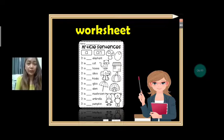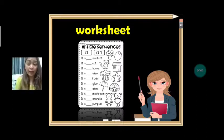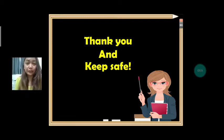I have worksheets for you to answer. Please write the correct answer using A and AN. You use AN if the vocabulary starts with vowel letters — A, E, I, O, U. You use A for consonants. That's all for today. Bye-bye and keep safe.